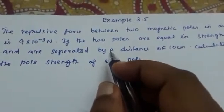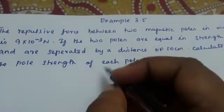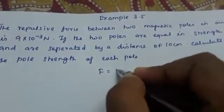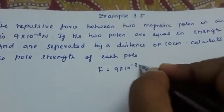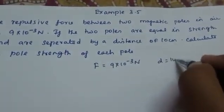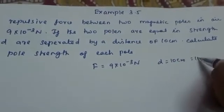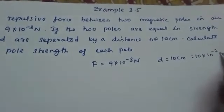The repulsive force between two magnetic poles is given, that is F = 9 × 10^-3 N. And the distance of separation is given as 10 centimeter, that is 10 × 10^-2 meter.